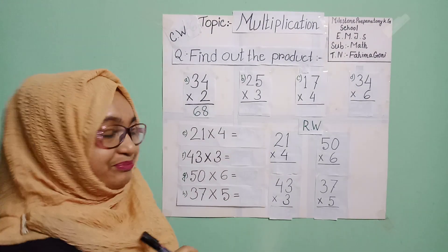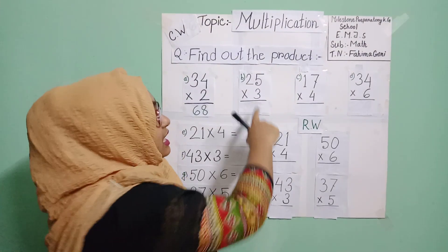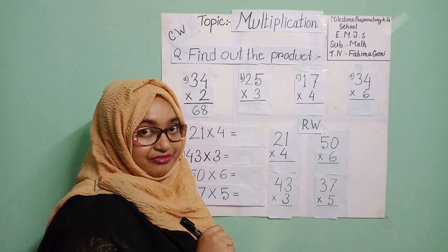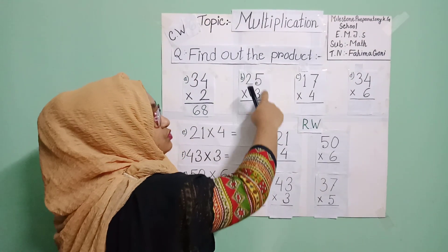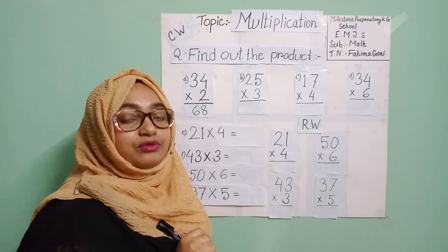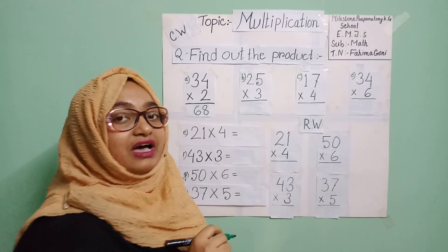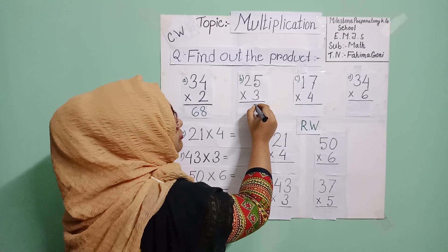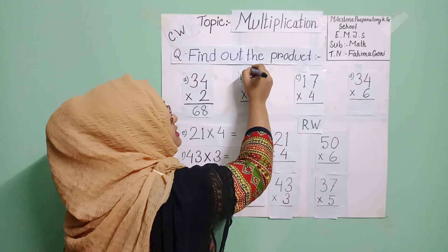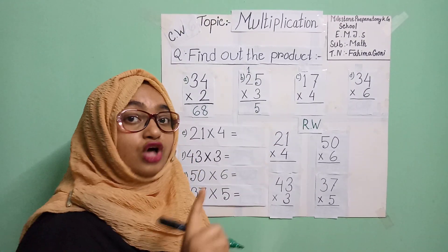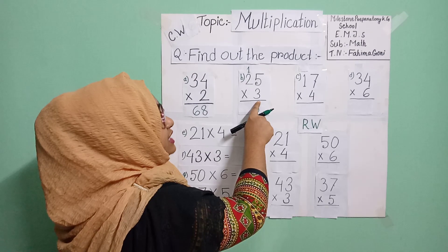Now we are going to problem B. The upper number is 25, so our multiplicand is 25 and three is the multiplier. We will use the three times table. Three fives are fifteen, so I write five here and carry one to the tens place on top.